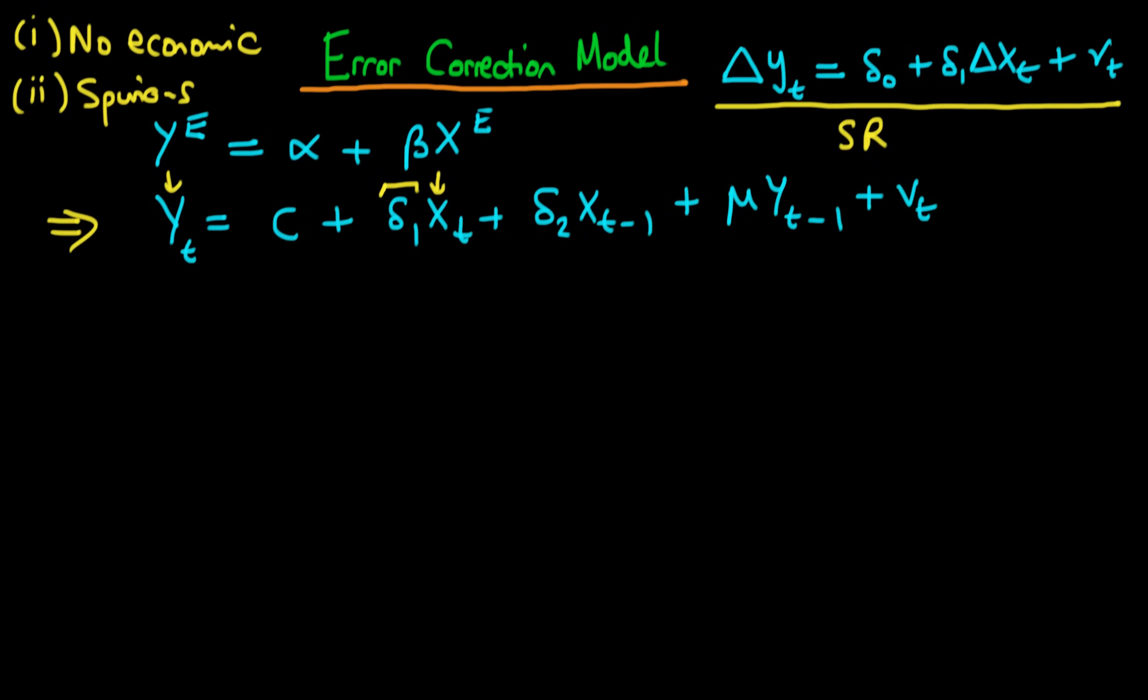So we'd like to be able to combat both of these things. We'd like to be able to estimate some sort of economic relationship and also we'd like to do away with this issue of spurious regression. And an error correction model is a way of doing this and how we get to that particular model I'm going to explain now.